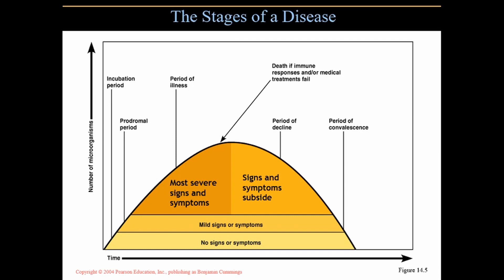The stages of a disease can be shown in a graph. Starting at the far left is the incubation period — no signs or symptoms. The pathogens are multiplying and dividing but haven't launched their attack yet; they haven't reached the numbers needed to produce their toxins. Compared to a bacterial cell, you are infinitely larger, so a few thousand of these cells inside you will do nothing while their numbers quietly and steadily increase.